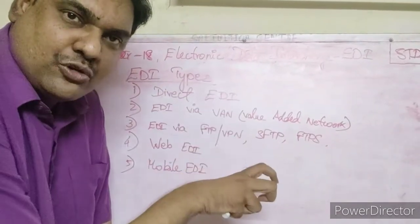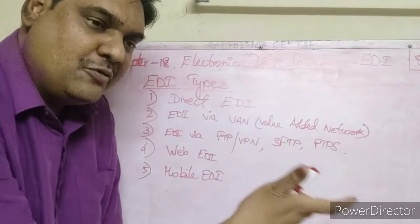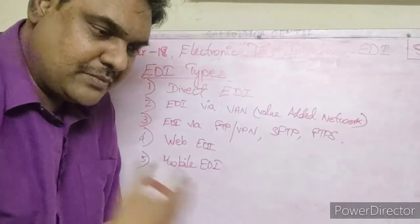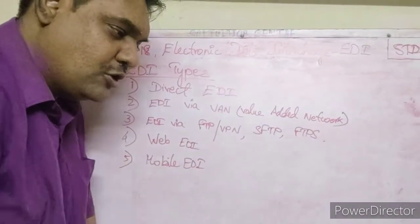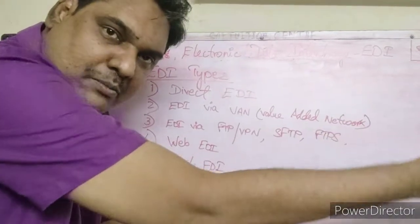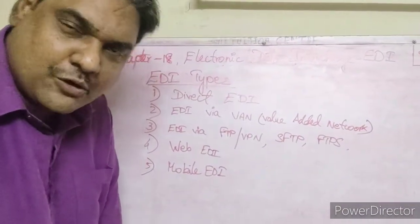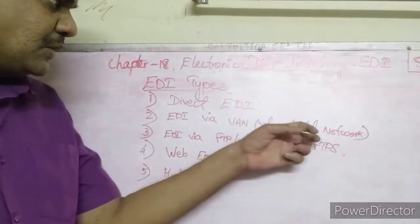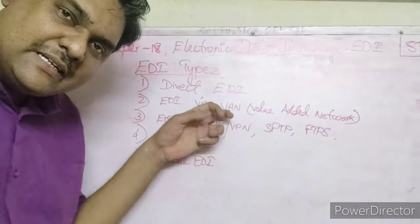So what we are doing is using a third-party network — a Value Added Network. We will hand our document to them and they will take care of sending it to our partner safely and securely. For that service, they will charge something. So that is Value Added Network — EDI via VAN.